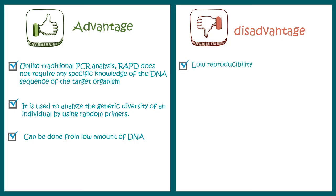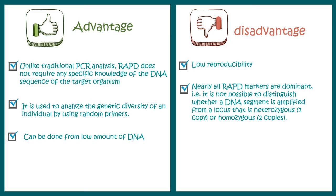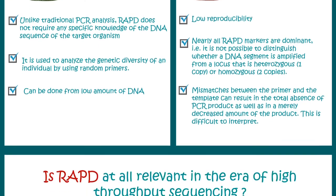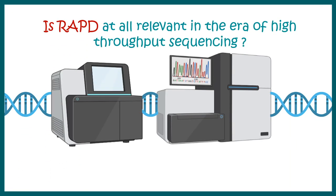Despite these advantages, there are many disadvantages: very low reproducibility; nearly all RAPD markers are dominant, making it impossible to determine heterozygous versus homozygous individuals; and mismatches between primers and templates can result in total absence or decreased PCR product, making results confusing and hard to interpret. In this era of high-throughput sequencing, the application of RAPD is questionable.